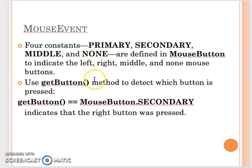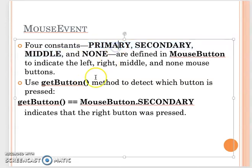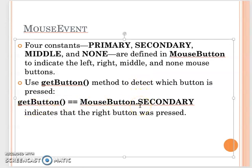Even though now your mouse button only has left and right, before we also had a middle click. When you get the button value, they give you some constant values. The primary button is the left click, secondary is the right click, and then you have the middle click. That's how you can compare your mouse button click.